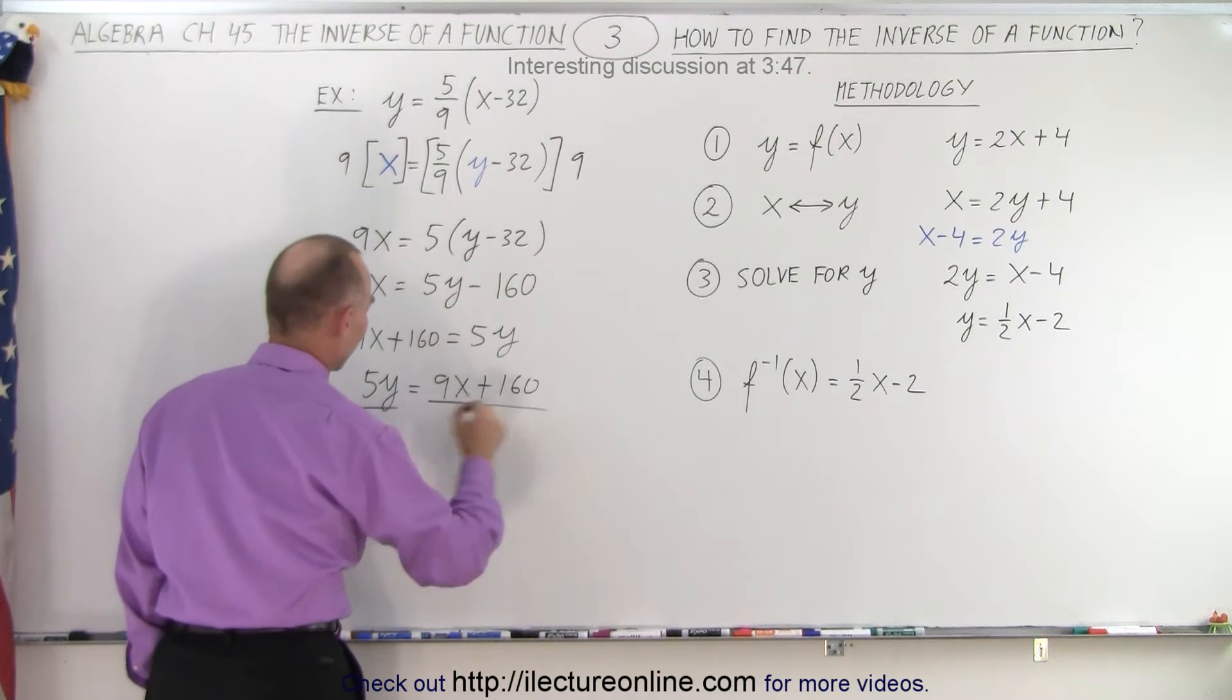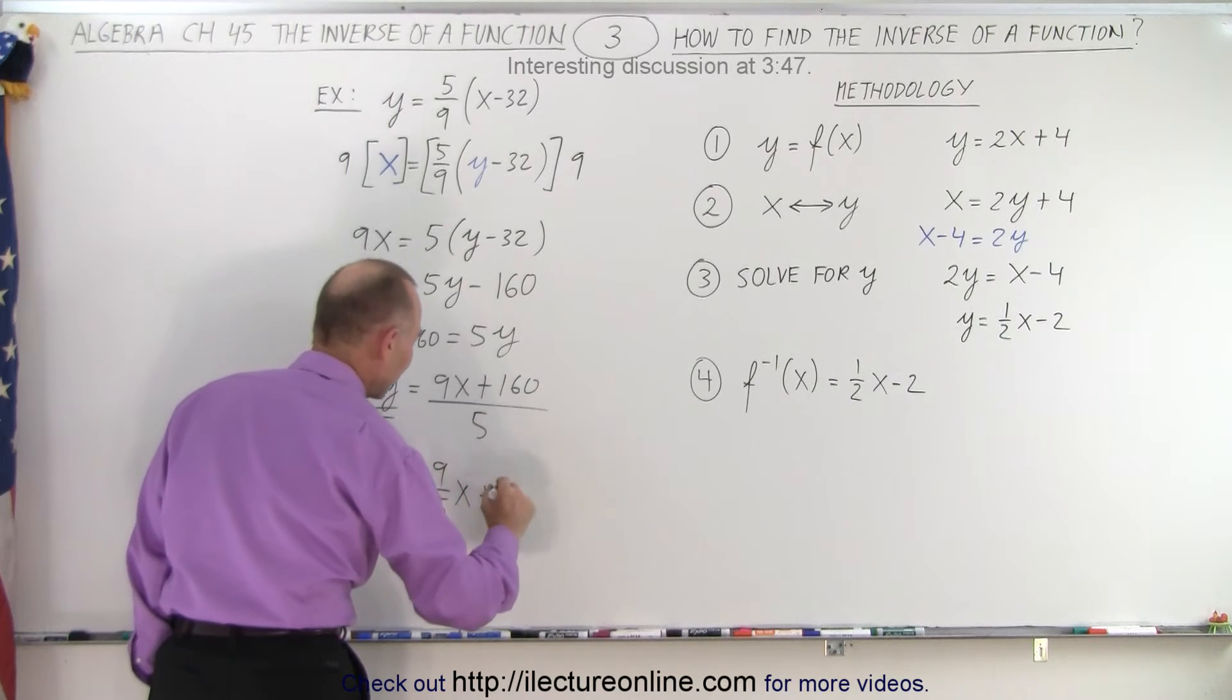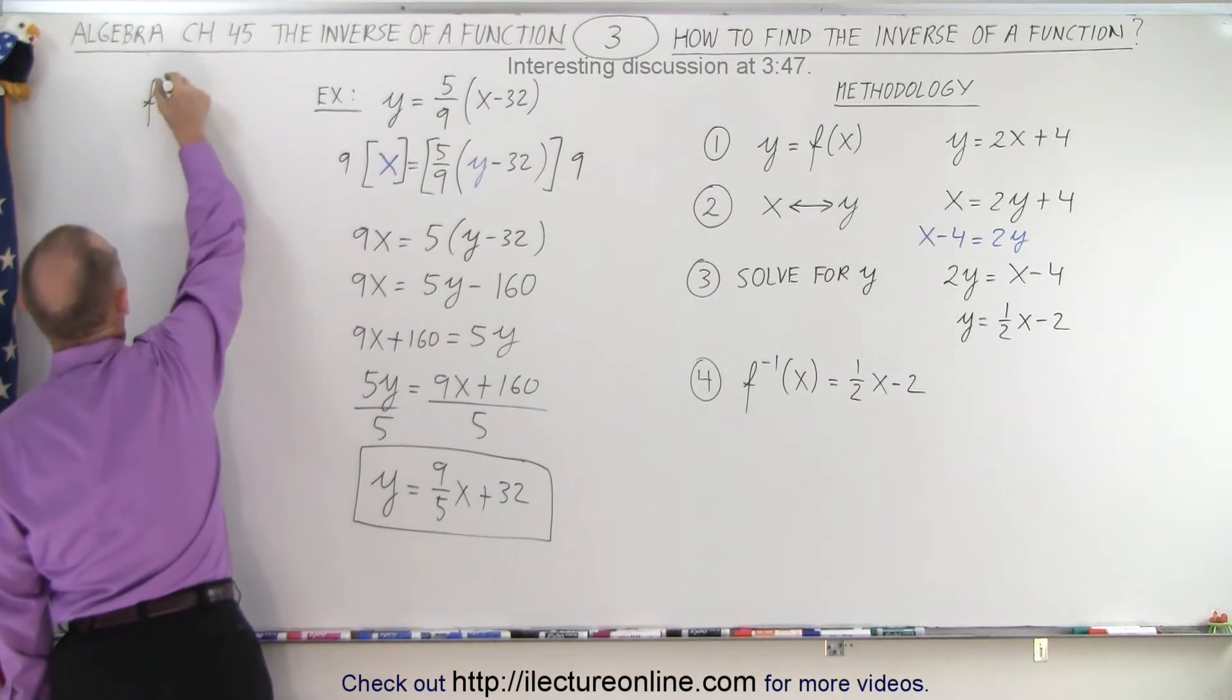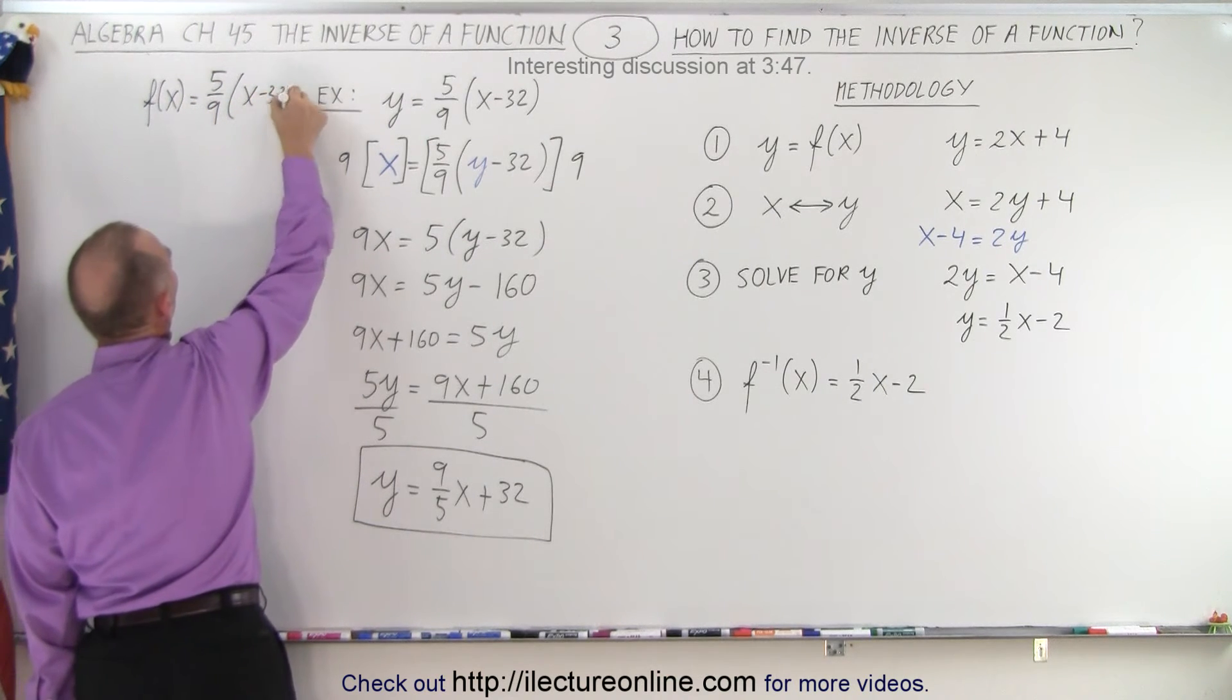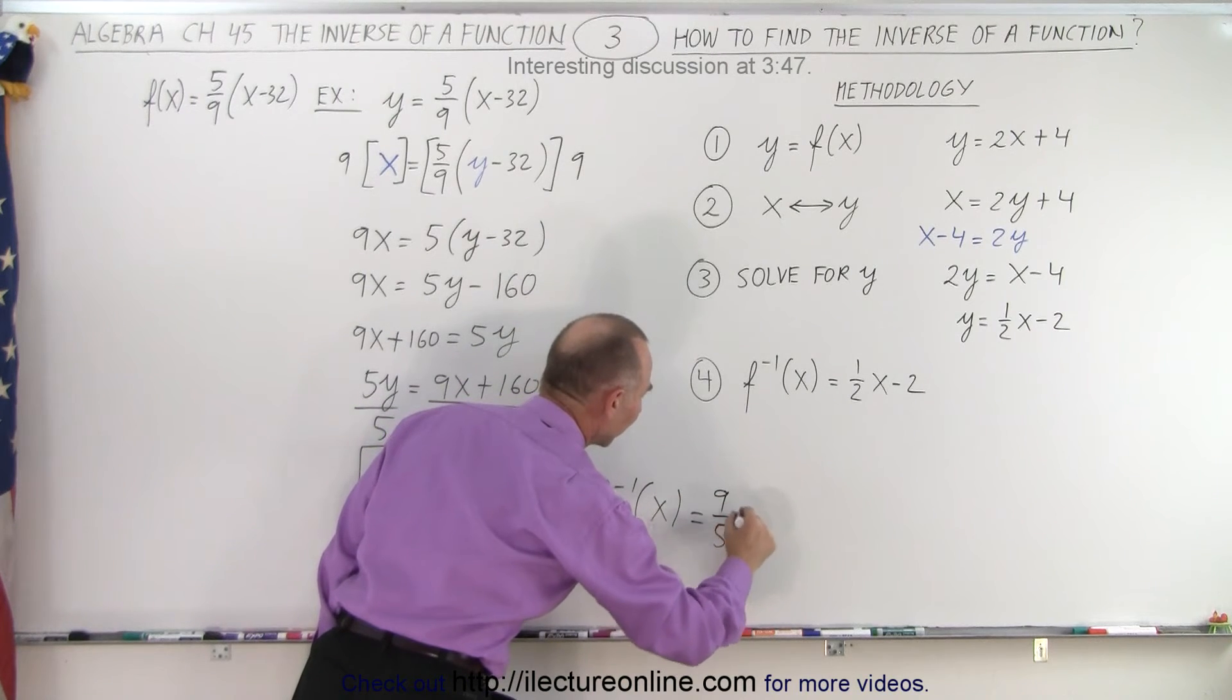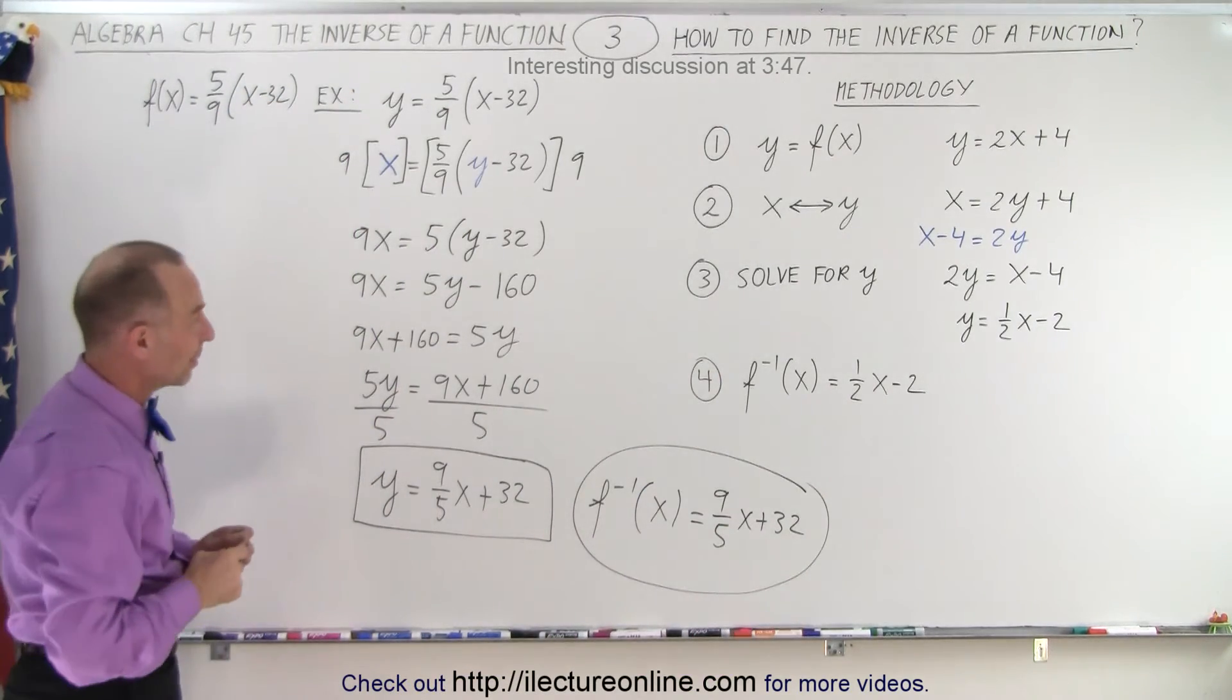And now we're going to divide both sides by 5. And we end up with y equals 9 over 5 x plus 160 divided by 5 is 32. And there we go. There's the inverse of that original function. The original function we can write it like this. F of x is equal to 5 over 9 times x minus 32. And then we can say that the inverse that function f inverse of x is equal to 9 over 5 x plus 32. So there's the inverse of this original function.